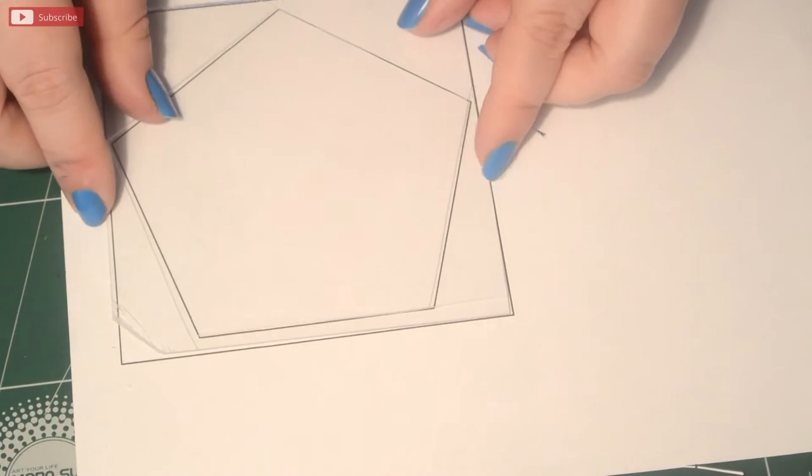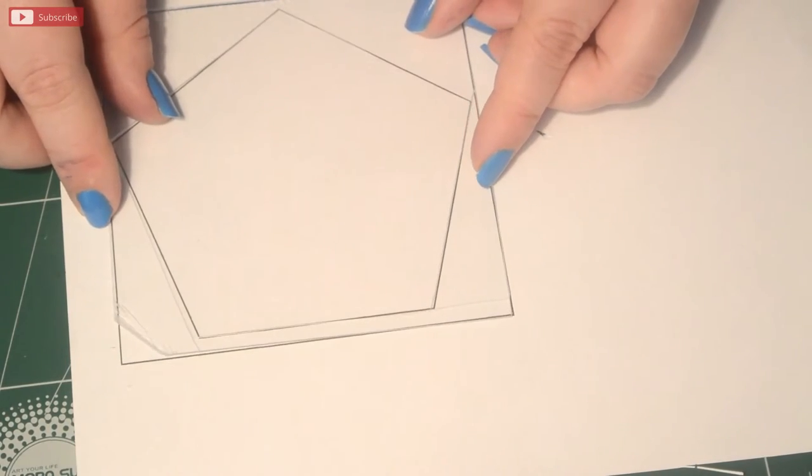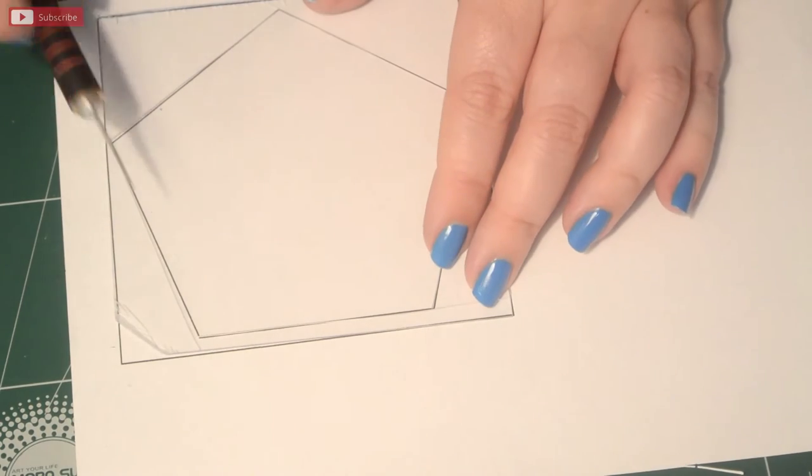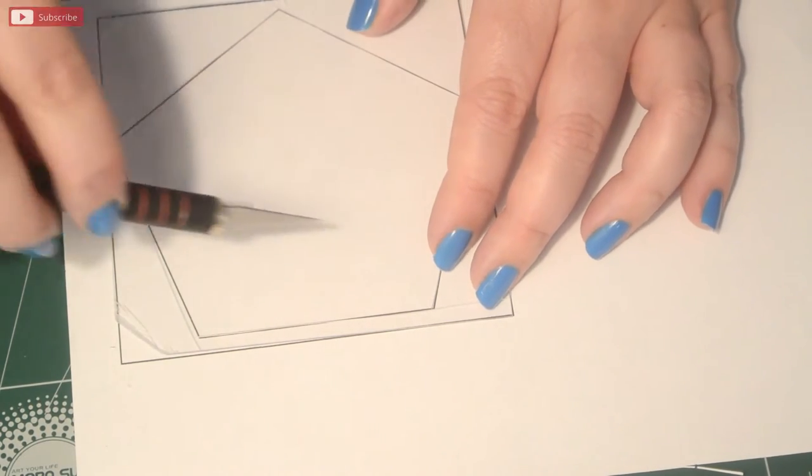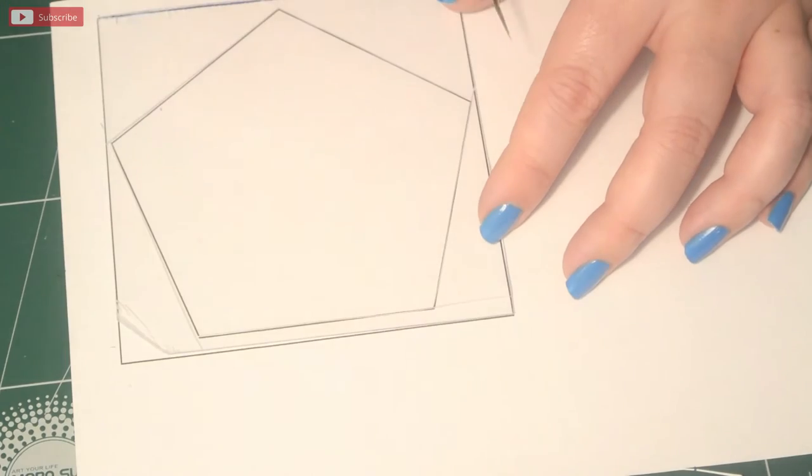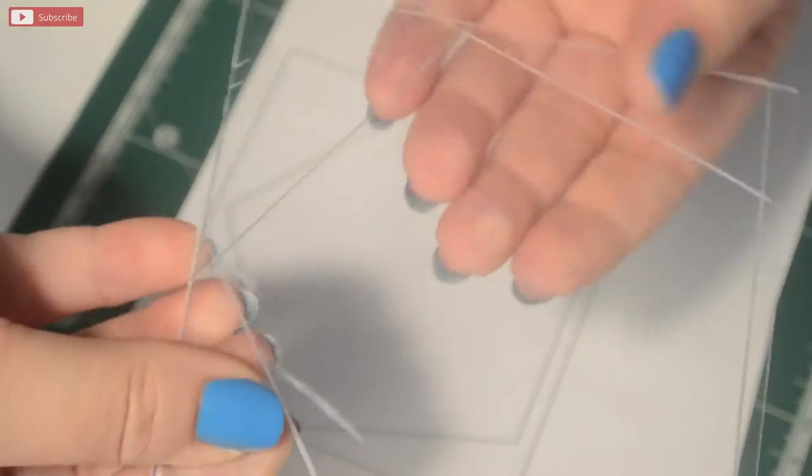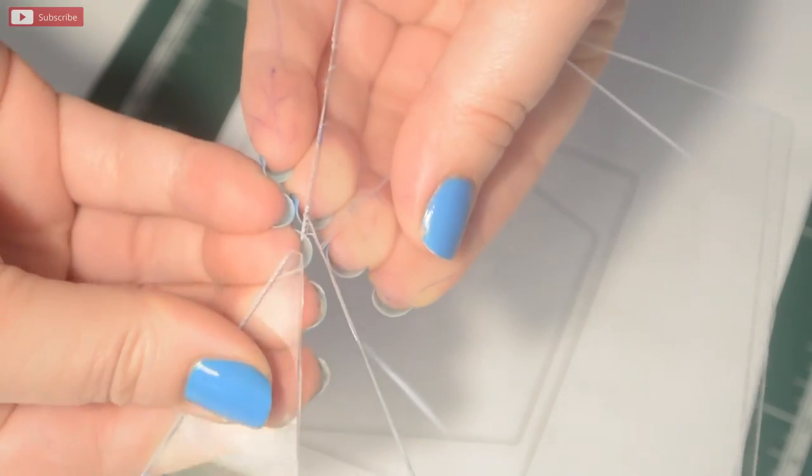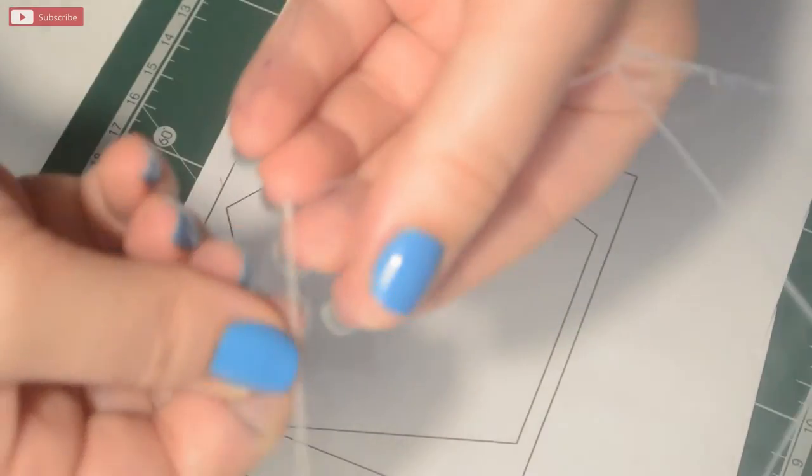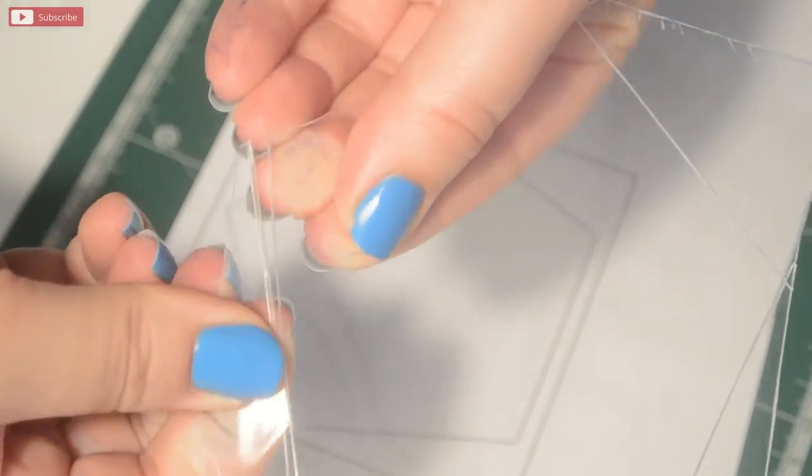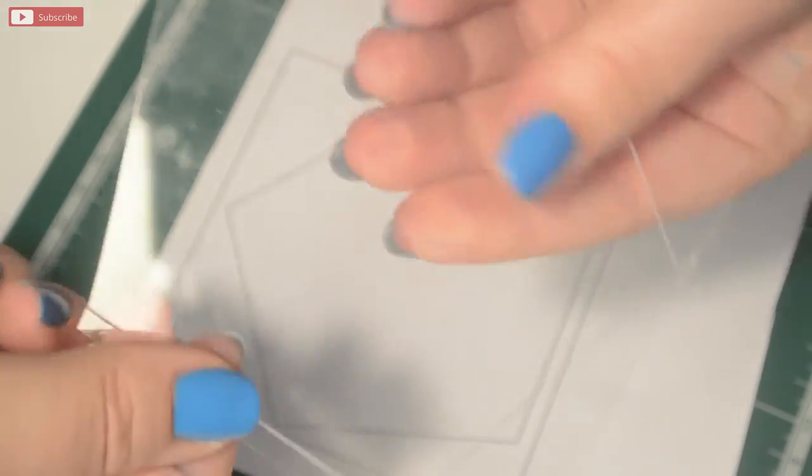Once you've done that, you want to flip the plastic around and then score again. Now the plastic will easily come apart once you wiggle it a little. Just be friendly with it and it will crack just like you want it down the lines.